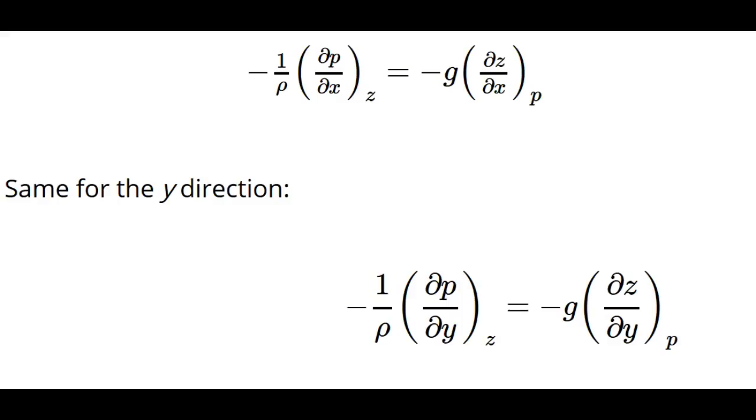After a little math, we can show that 1 over rho, that is 1 over the density, times the change in pressure with respect to x or y on a height surface is equal to g times the change in z with respect to x or y on a constant pressure surface.